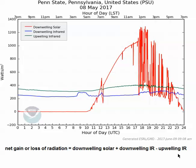Let's look at an example from Penn State University on May 8, 2017. To get our bearings on the graph, the red curve shows downwelling solar radiation, which is coming to the ground and being absorbed. The blue curve shows downwelling infrared radiation, which is radiation coming to the Earth from clouds and air molecules in the atmosphere. The green curve shows upwelling infrared radiation, which is radiation being emitted from the Earth. The solar curve is flat at zero watts per square meter until just after 10z, which is 6 a.m. local time at Penn State on May 8, because daylight saving time is in effect.